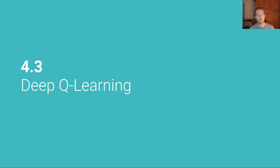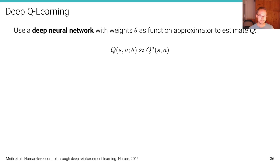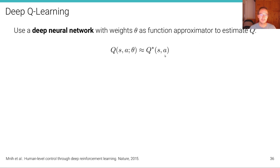And this is where deep Q-learning comes into play. In deep Q-learning, we alleviate this problem by instead of using a Q-table, we're using a deep neural network with weights theta as a function approximator to estimate Q. The optimal Q-function, Q-star, is approximated through a neural network with parameters theta that takes as input the state and the action and outputs the Q-value.